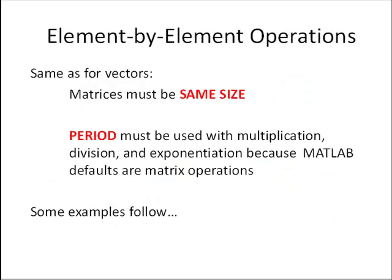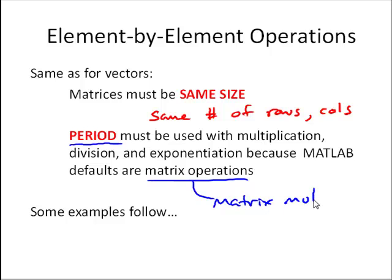Let's talk about element-by-element operations. Same as for vectors, but now the matrices must be the same size, which means same number of rows and columns. Again, we need a period used with multiplication, division, and exponentiation because the MATLAB defaults are matrix operations. We'll actually talk about matrix multiplication in the next video. Following are some examples of element-by-element operations using matrices.